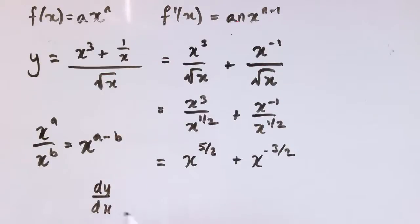So differentiating this, we get dy/dx is equal to, now applying this rule, 5 over 2, x to the 3 over 2, which is 2 and 1/2 minus 1 is 1 and 1/2.